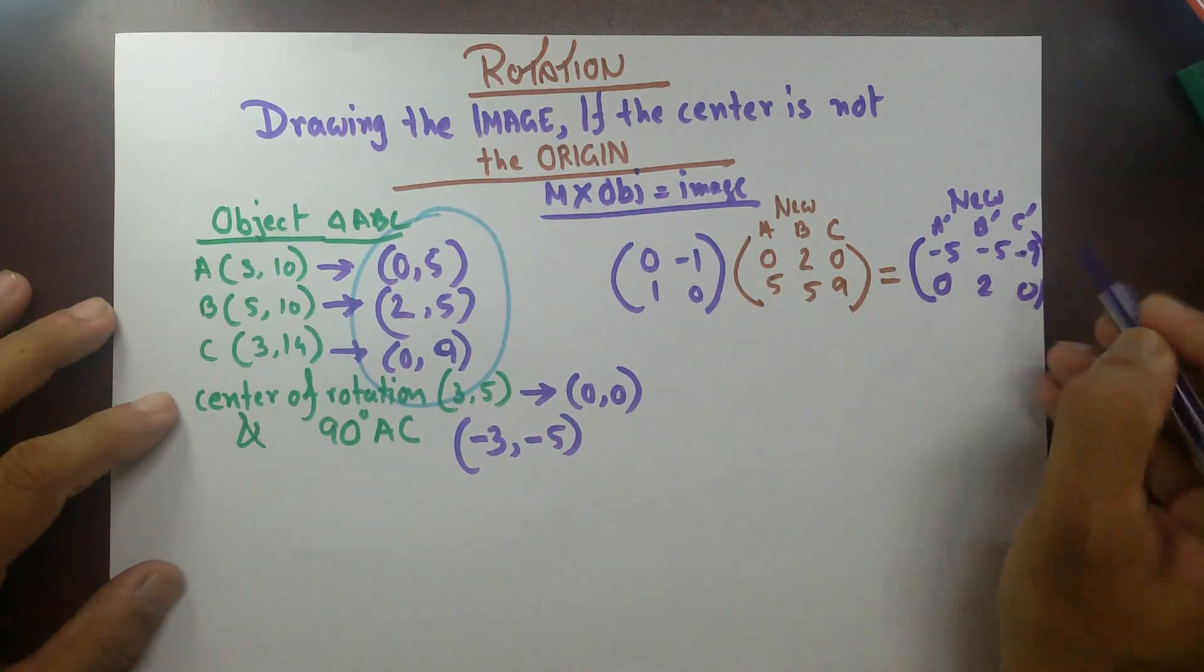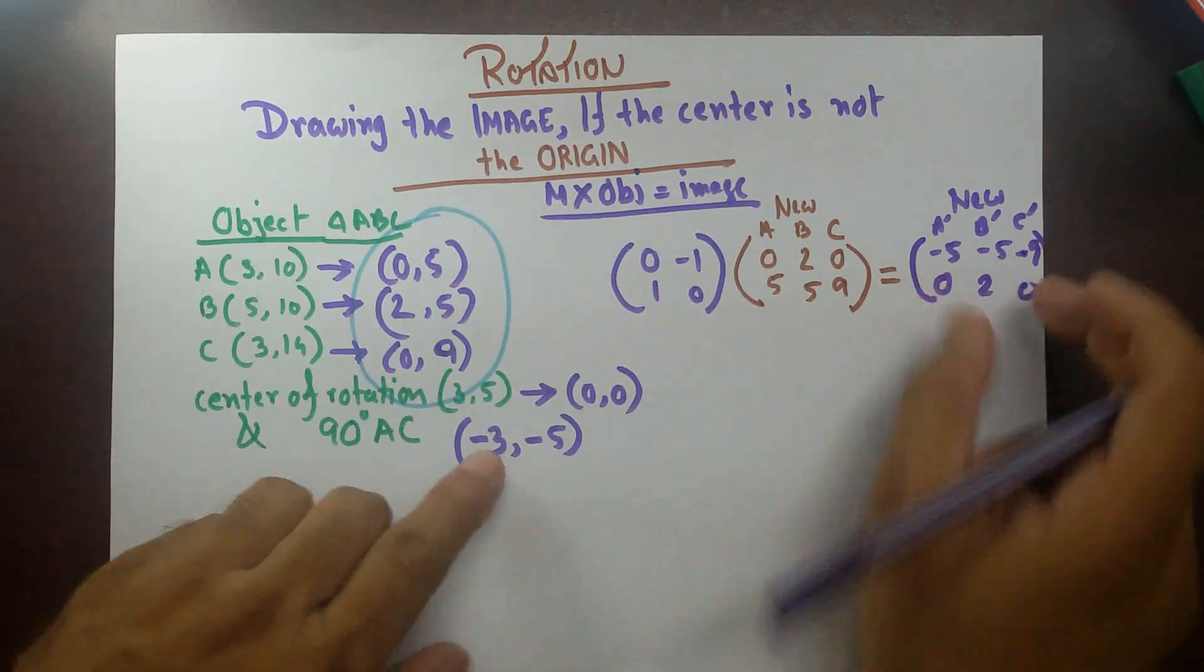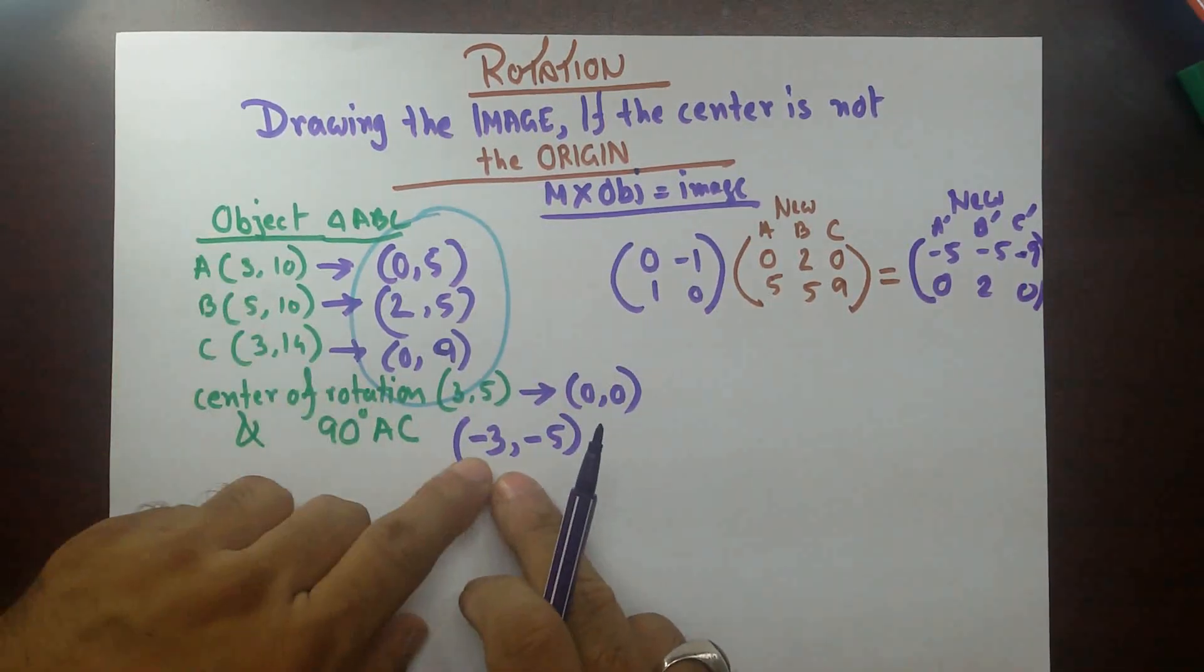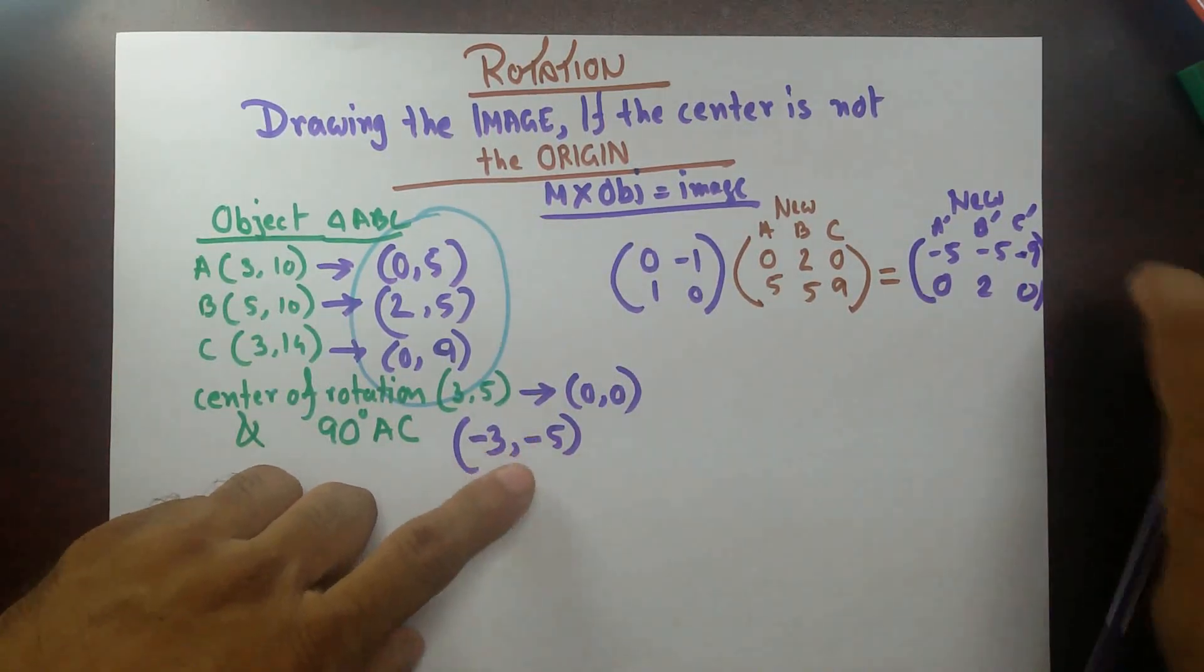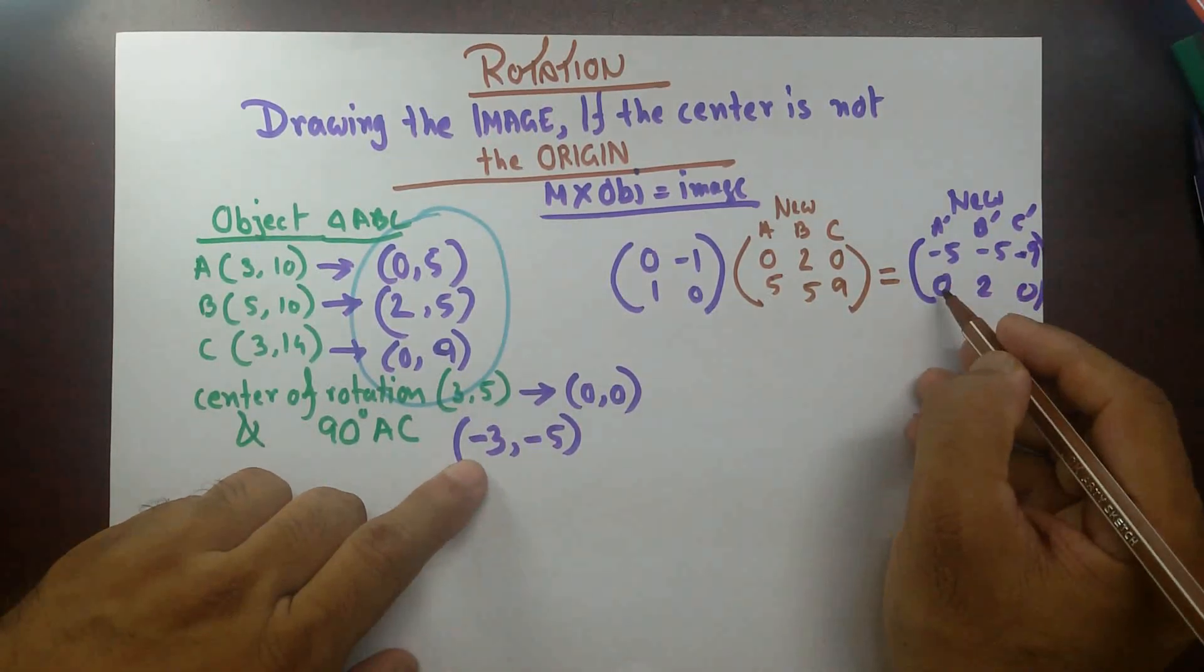Now, we know that this is not the actual coordinates of the image because from the original one, we subtracted minus 3, minus 5. Now, what to do? We're going to add this back. So I have minus 5,0.